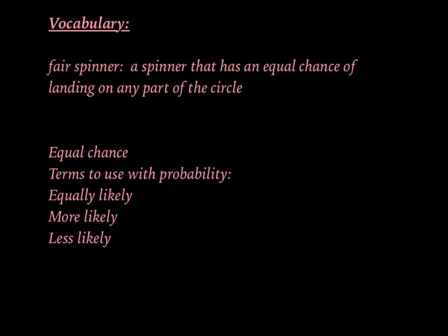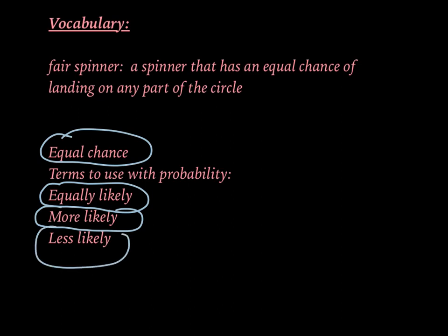For vocabulary today, we have fair spinner – a spinner that has an equal chance of landing on any part of the circle. And then some words that you are going to be very familiar with would be equal chance, equally likely, more likely, or less likely. Those are some words that you are going to hear and you are going to need to be able to use.